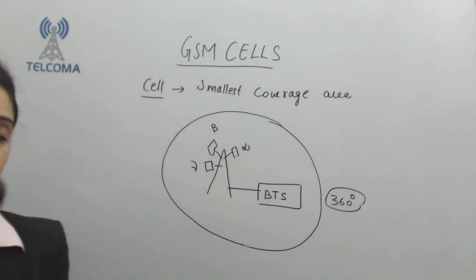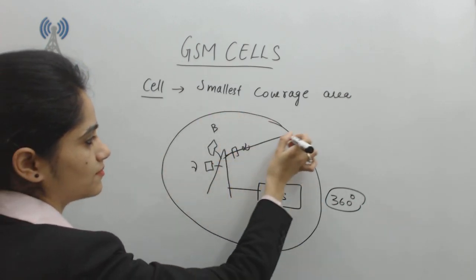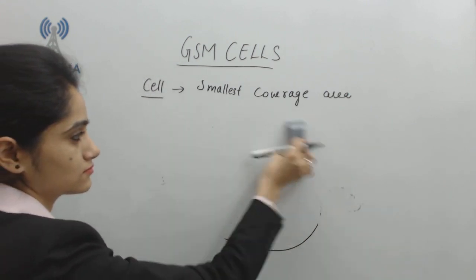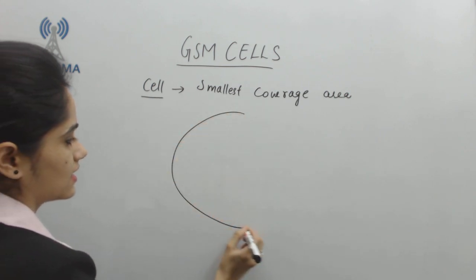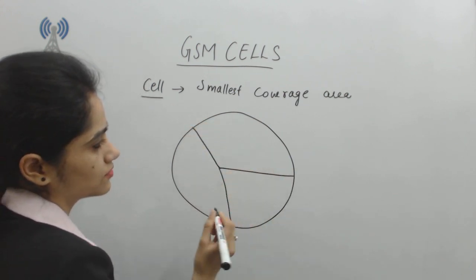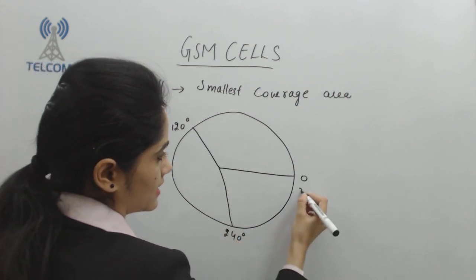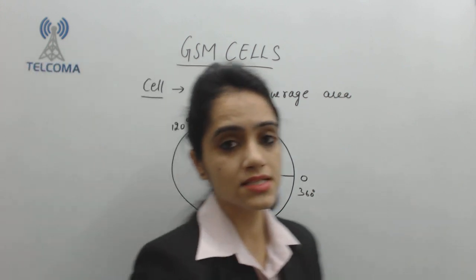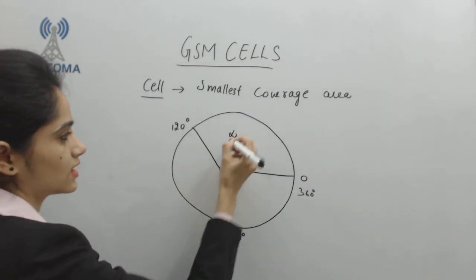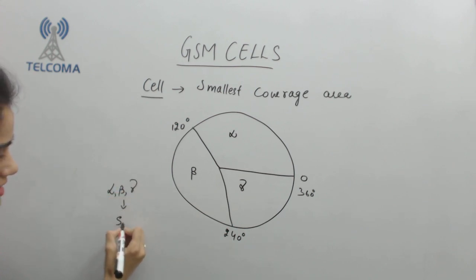It is not practically possible to give 360-degree coverage with a single antenna. So I have divided the whole circle into three parts at an angle of 120 degrees each, to achieve full coverage of the complete circle. I named these parts: 0 to 120 degrees is Alpha, the next is Beta, and the last is Gamma. These parts are called sectors.